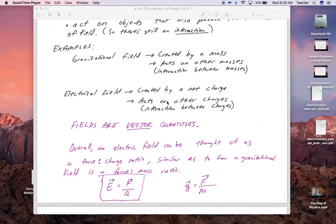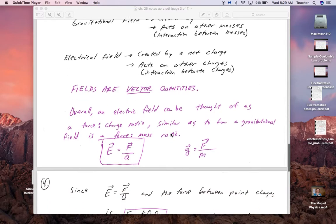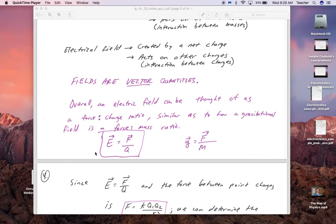It acts on other charges which also would have their own electric field. Fields are vector quantities. Here's a comparison: electric field is a ratio of force to charge, newtons per coulomb. Gravitational field is ratio of force to mass, newtons per kilogram. Newtons per kilogram also works out to meters per second squared.